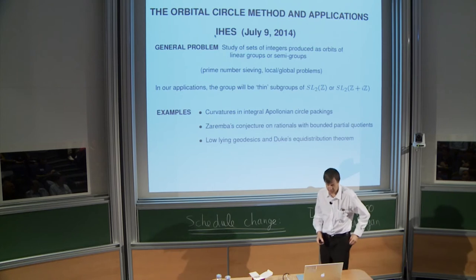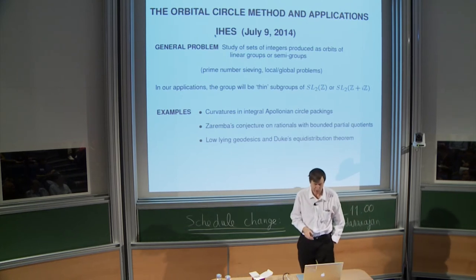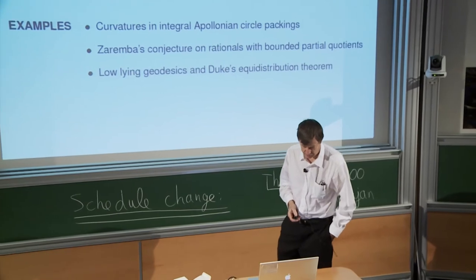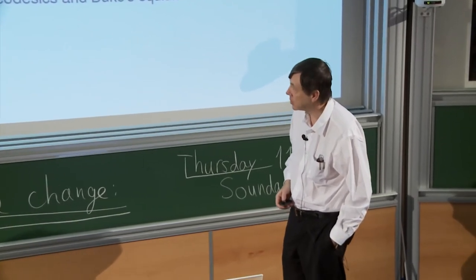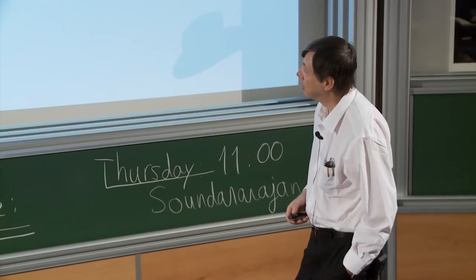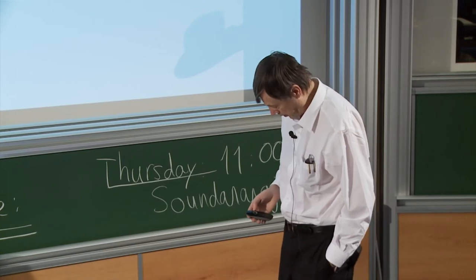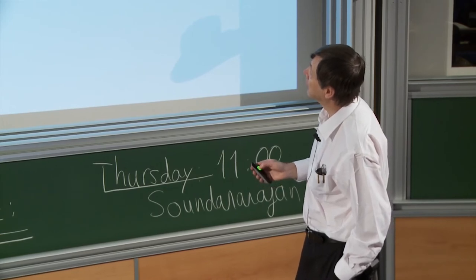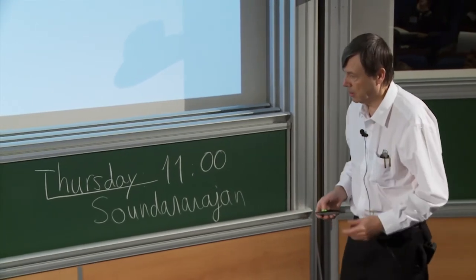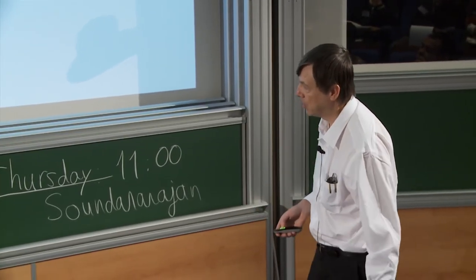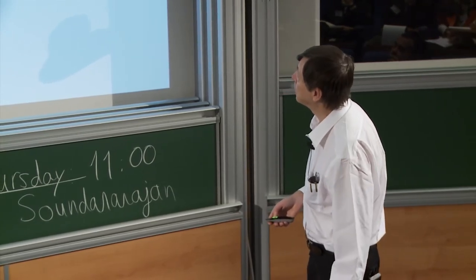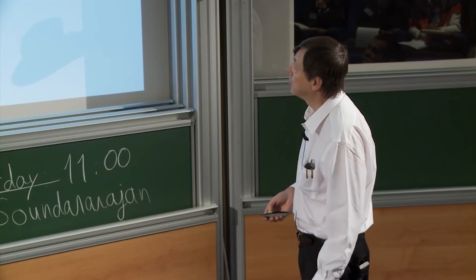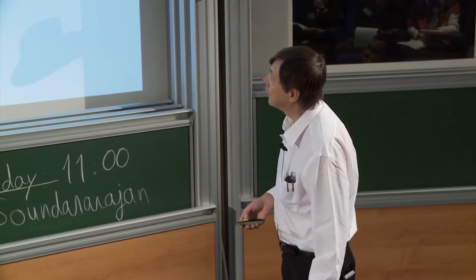Let me thank the organizers for the invitation. The topic I'm going to discuss is mostly joint work with Alex Kontorovich, and there is also some ongoing work. The general theme is to understand sets of integers which are not exactly standard arithmetical objects, but produced in the orbits of linear groups, or in the orbits of subgroups or sub-semigroups of linear groups.